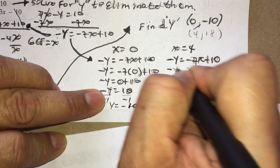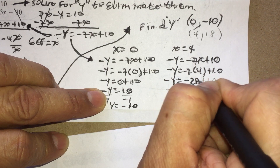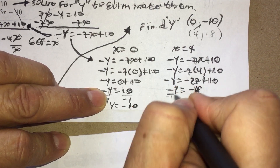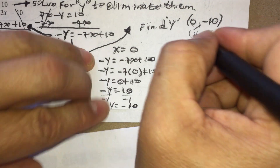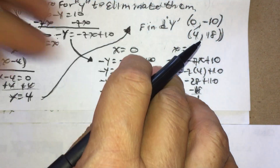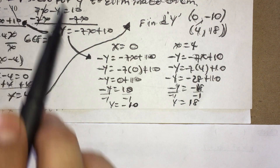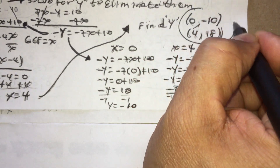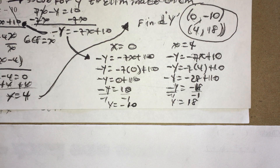For x = 4: −y = −7(4) + 10 = −28 + 10 = −18, so dividing by negative 1, y = 18. My second solution is (4, 18). Be careful with signs — if you drop the negative, you'll get the wrong answer and it won't check. These are the two points where the parabola and the line cross each other. Now let's go to the next problem.